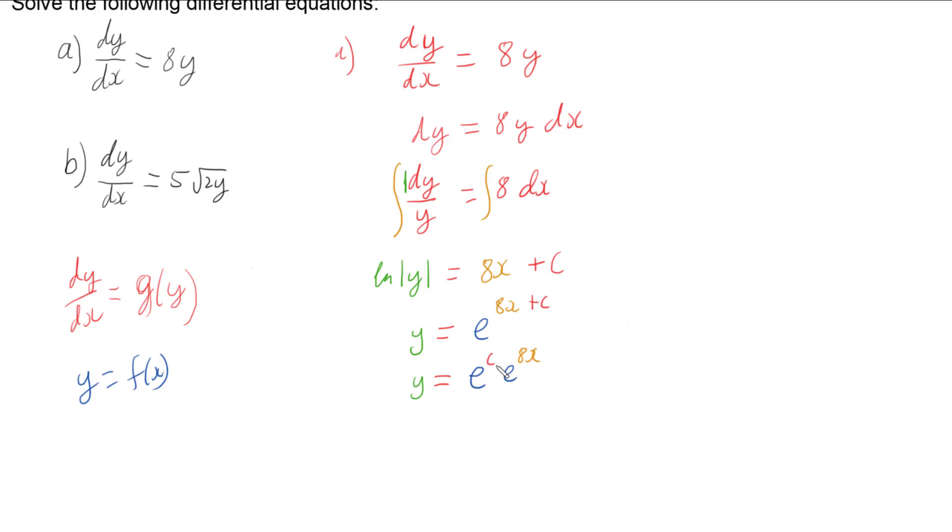Now e to the c, c is just a constant and e is just a constant, so a constant to a constant is just going to be a constant.